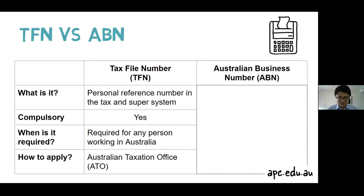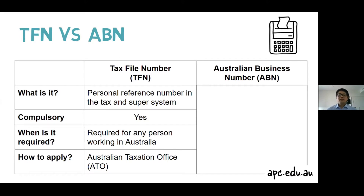Your Tax File Number will be yours for life. If you change your name, change your job, move to another state in Australia, or go overseas, you will always keep the same Tax File Number. When you start to work in Australia, having a TFN becomes compulsory. If you do not have one, you may need to pay a higher tax rate. Additionally, you may not be able to apply for government benefits, you cannot lodge your tax return online, and you cannot get an Australian Business Number without a TFN.